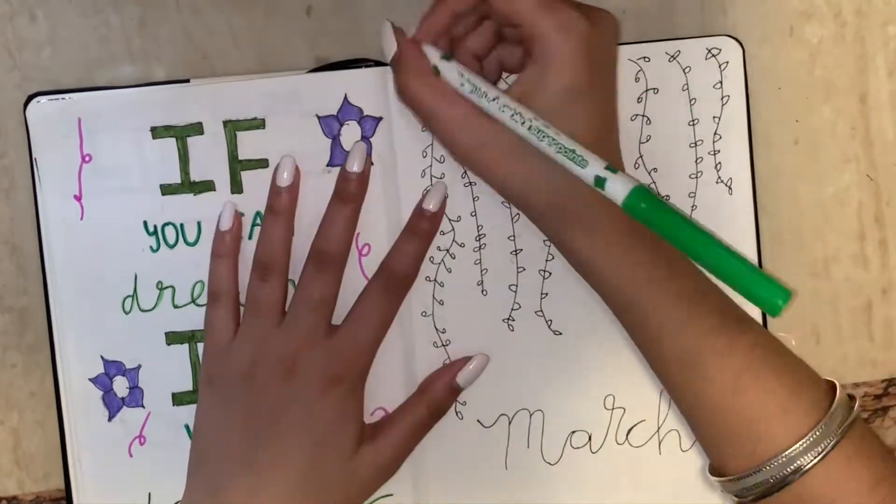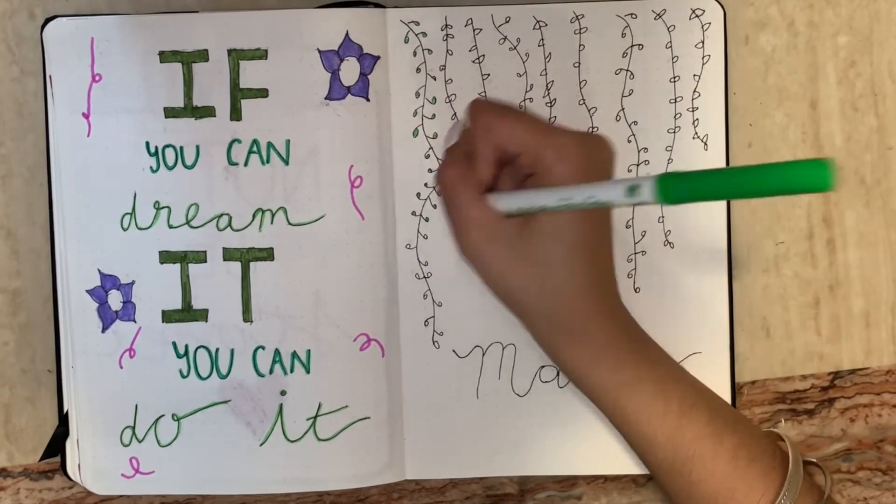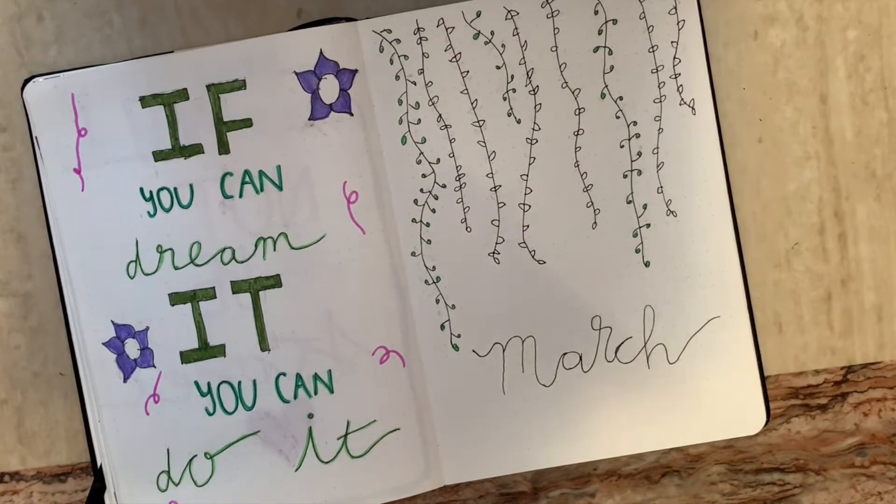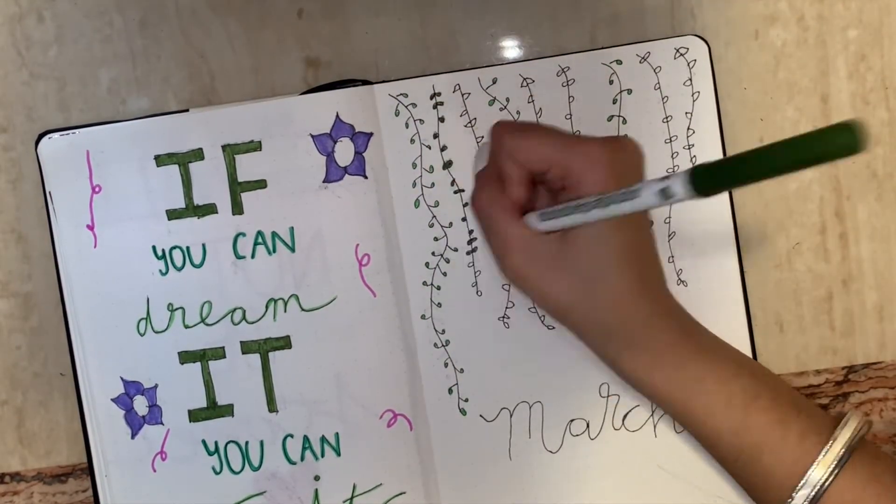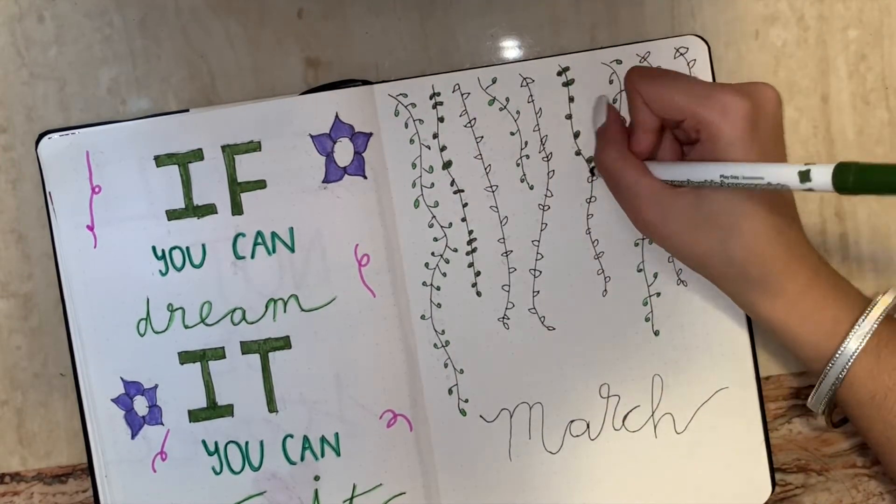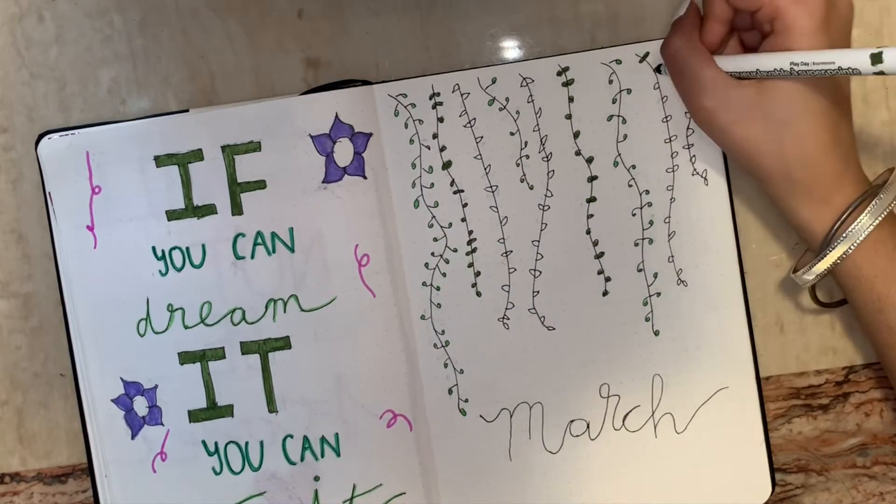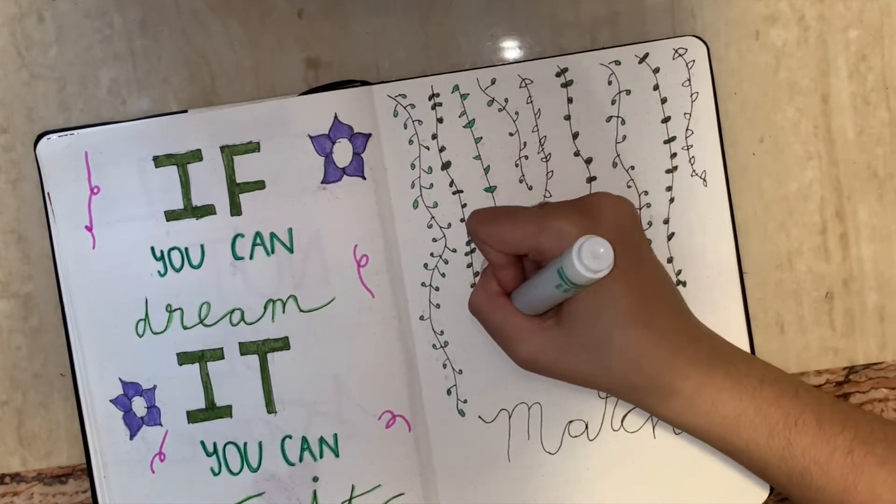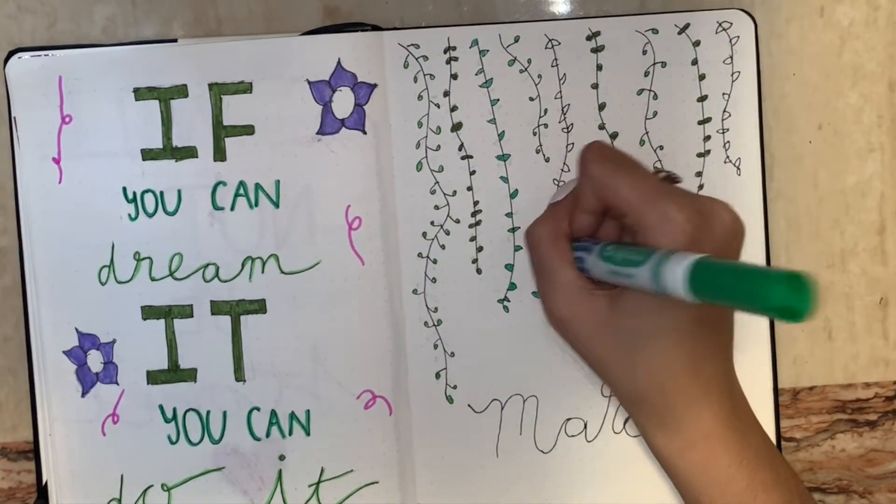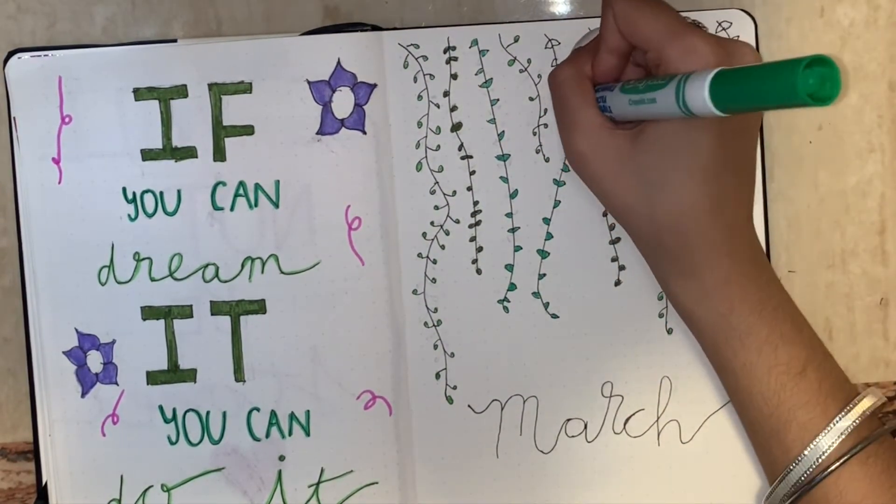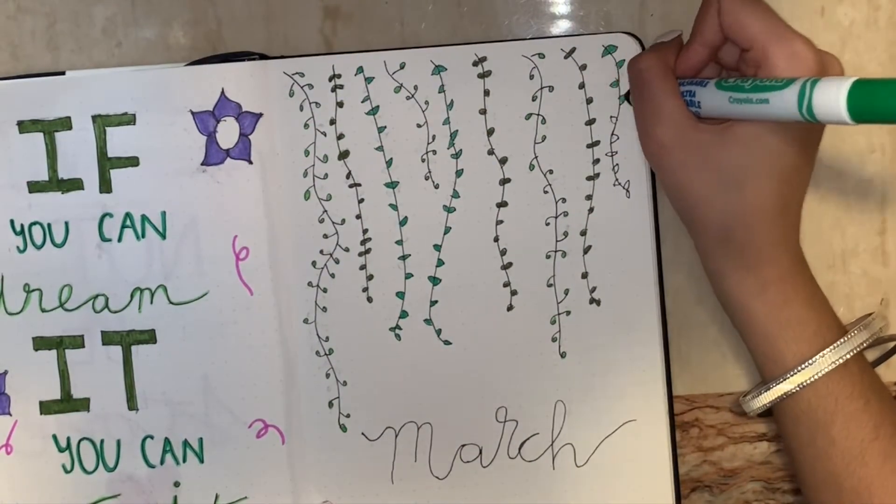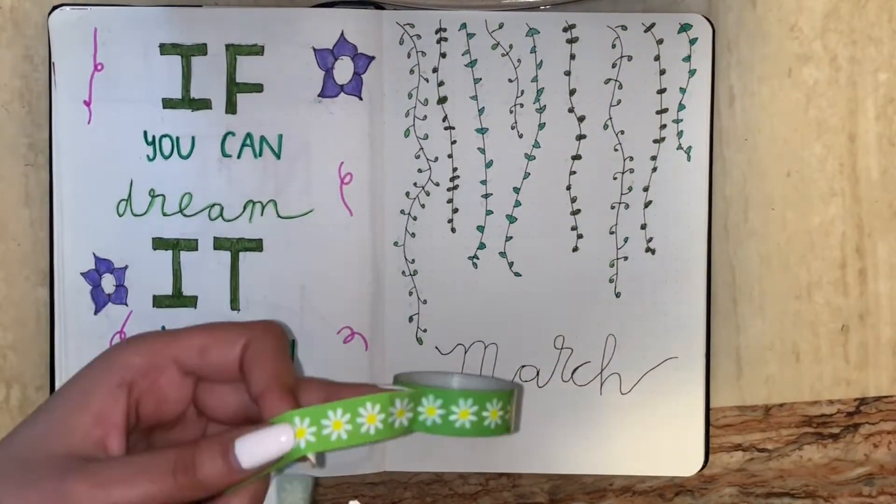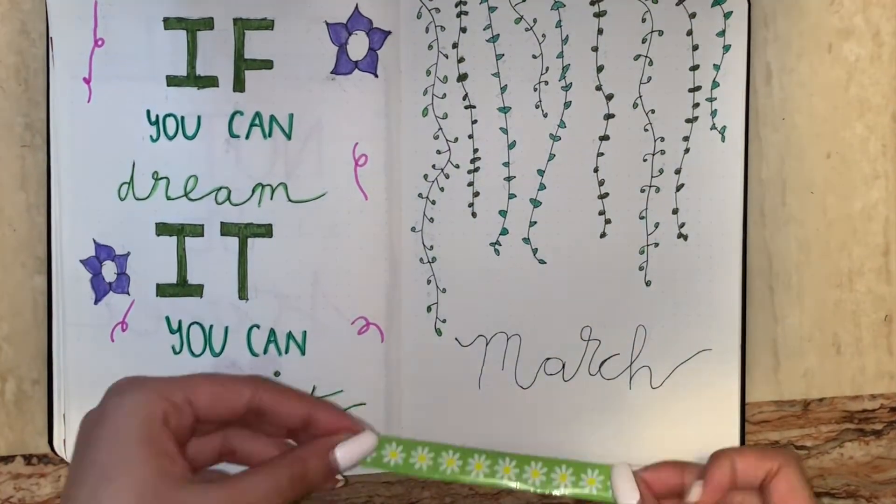So I am again using the same three shades of green. Now I'm just adding some washi tape under the March, and this is some washi tape I got from Walmart a while back, maybe like two years ago.